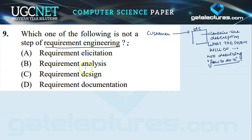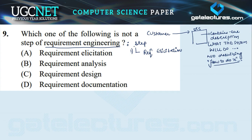Now in requirement engineering, the first step is requirement elicitation, which means to gather the requirements. Requirement elicitation is an activity that helps us understand what problem has to be solved and what the customer expects from the software. With the help of requirement elicitation, we get to know two things: what problem needs to be solved and what are the customer's expectations from the software.